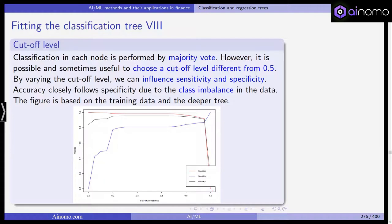Let's talk about the cutoff level. Classification in each node is, as I mentioned in the previous video, performed by a majority vote. However, it is possible and sometimes even useful to choose a cutoff level that is different from 50%. You can also vary this cutoff level and we can influence the sensitivity and the specificity by choosing a different cutoff level.